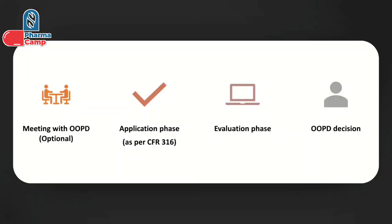Now let's see the steps to gain orphan drug designation in the US. First is requesting a meeting with FDA's OOPD — the Office of Orphan Product Development. Then you submit your ODD application. Then OOPD reviews and evaluates your application, and finally the decision is made and communicated to the sponsor. Let's go through each of these steps one by one.